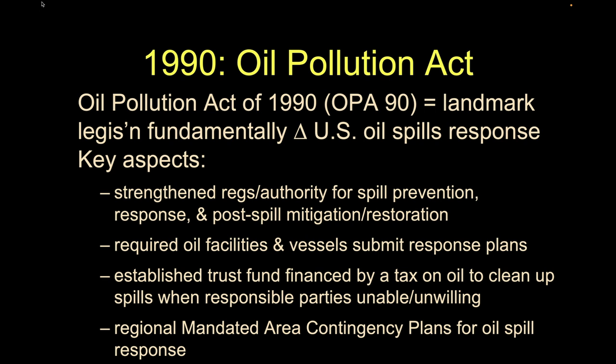OPA-90 also created area contingency plans for oil spills — not just the polluter making a plan, but regional plans as well. In our part of the world, the Ventura Fish and Wildlife office is a strong coordinator, paying for training for people like me and others outside their agency, so we have a cadre of experts ready to help with response when a spill happens. That structure grew out of OPA-90.